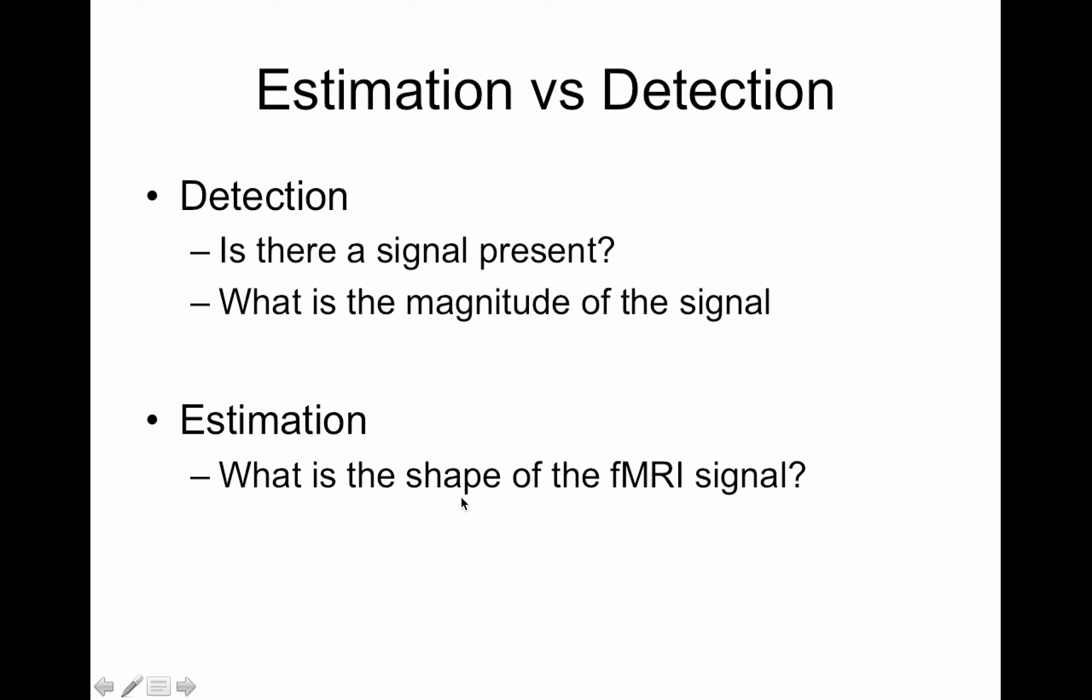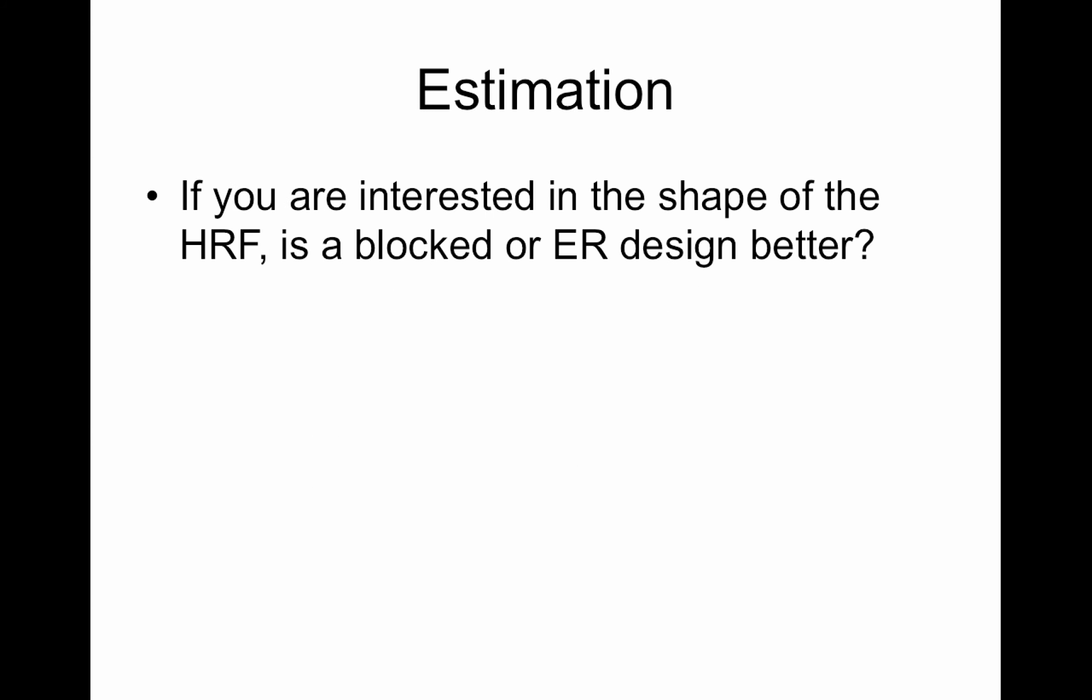Whereas estimation's like hold on I actually do want to know what the shape of my fMRI signal. I want to know exactly what it looks like and there's something about that shape that you want to use to differentiate between your stimuli. Because of that estimation is typically harder to work with because how do you then collapse information across subjects or runs - not collapse but combine - like what part of the HRF do you look at? Do you just look at pictures of it and then carry out inference? Anyway so hopefully that's clear detection versus estimation.